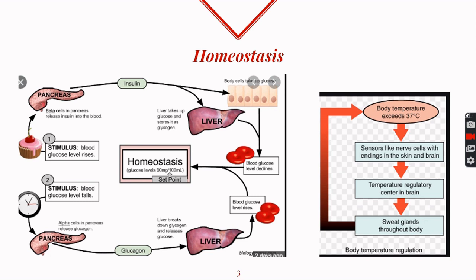Let's take the example of body temperature. The body temperature of humans is fixed at 37 degrees Celsius. If temperature goes below 37°C, the enzymes in the body will not function properly — they become deactivated. If the temperature goes higher than 37°C, enzymes get destroyed. If temperature rises above 37°C, a message reaches the brain, which orders the sweat glands to secrete sweat. When this sweat evaporates from the surface of the body, it causes cooling and the temperature falls back to 37°C. This is homeostasis.